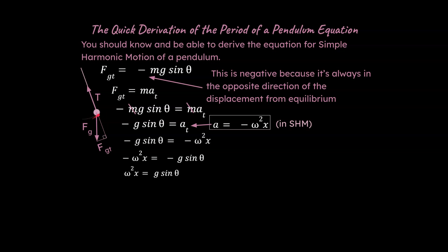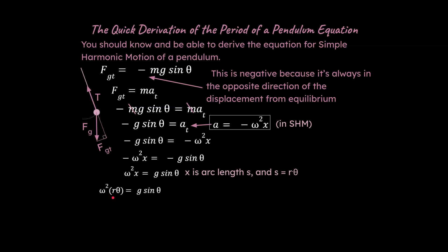This x value is a little confusing — what we really want is an arc length rather than an x, because the motion here is an arc length, not a true x value. So we're going to change that x into an s, and we know that s = rθ, which is on the equation sheet for AP Physics C Mechanics students. We'll substitute that in, and we can also say that r — the radius — is actually the length of the pendulum, so we'll replace r with L.